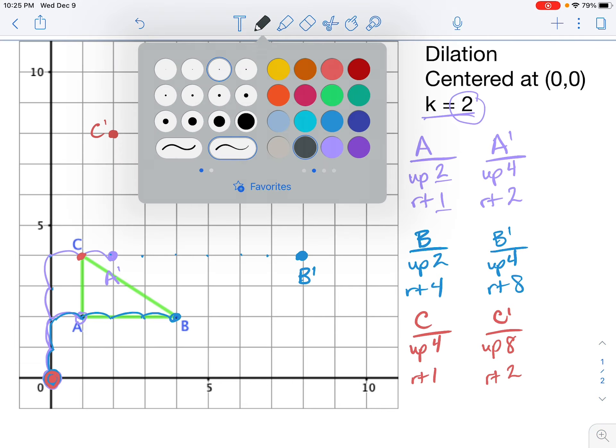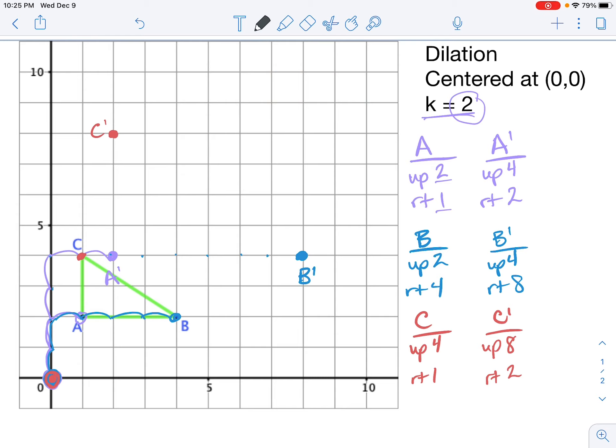And my final step is just to connect those. Like so. So this is my new triangle, A prime, B prime, C prime. I can tell, yes, it is further away from the center of dilation, which is what should have happened since the scale factor of 2 is greater than 0. And I can tell that my new triangle is larger than the original triangle that I started with.